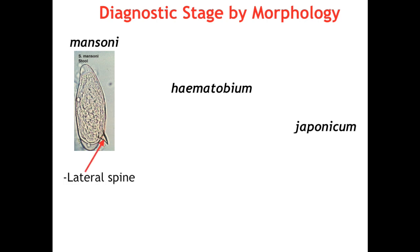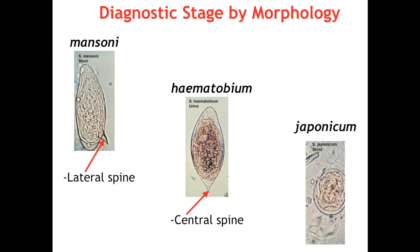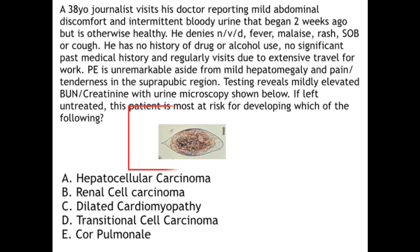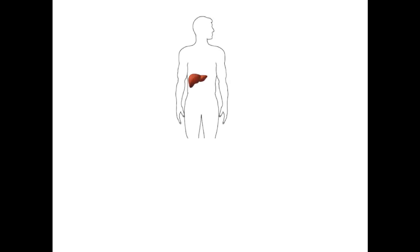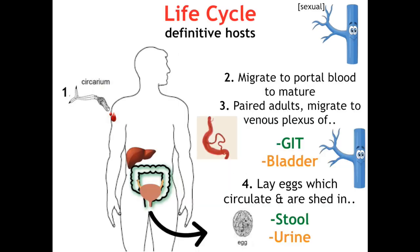The shed eggs are used diagnostically to identify the species, since each has a different shape. Mansoni has a lateral spine — L for left, L for lateral. Haematobium has a terminal spine in the center. Japonicum has no spine and is round — R for right, R for round — and the Japanese flag is a circle, another memory aid. Microscopy of the egg is usually shown in the vignette or as part of the answer options.